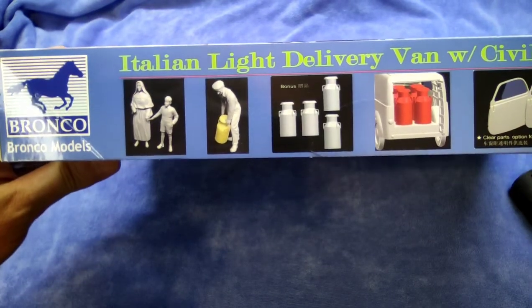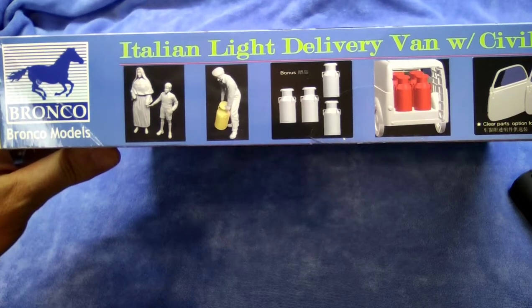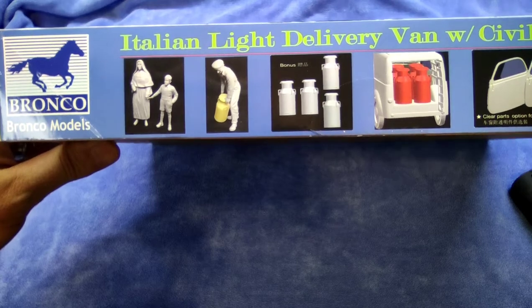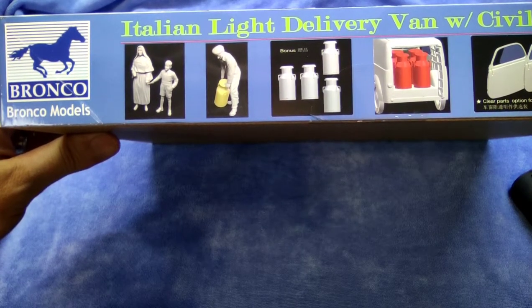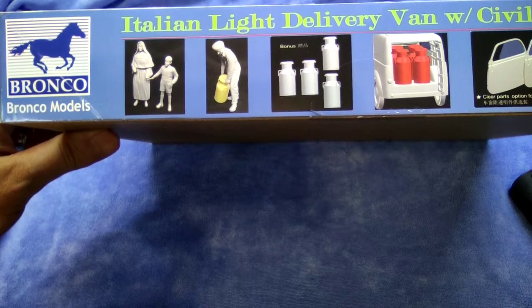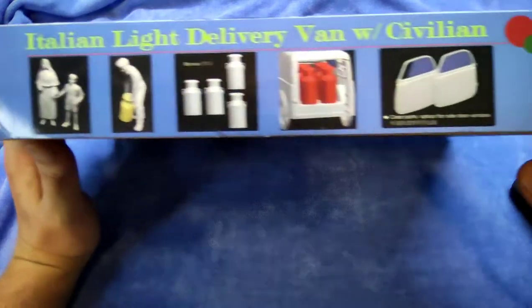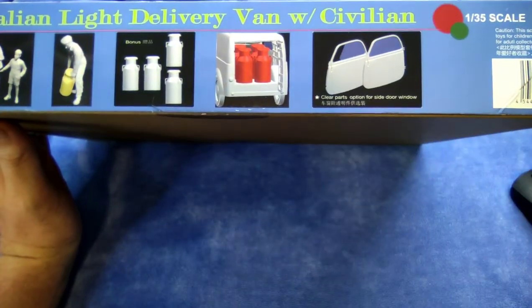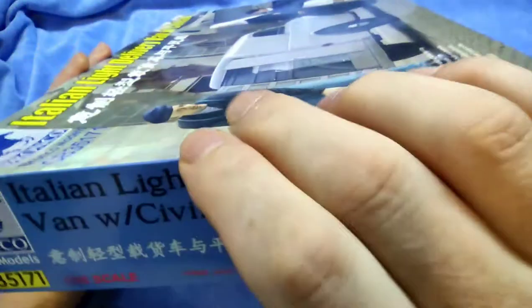The Germans apparently used it as a light staff car, and then there was another one with new parts, a civilian version also in 2013. This one then came out in 2014. Here you see the figures, a couple of milk containers, and a look at the doors telling you that there is a clear part option for the side doors.